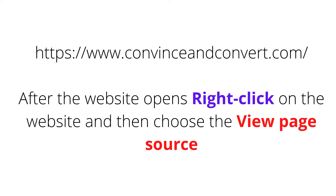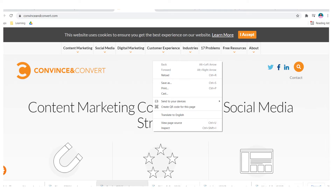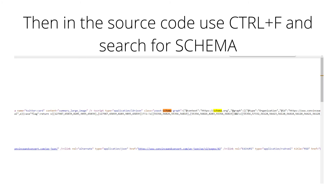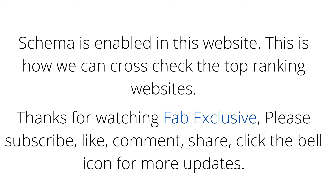After the website opens, right-click on the website and choose 'View Page Source.' Then in the source code, use Ctrl+F and search for 'schema.' Schema is enabled on this website. This is how we can cross-check the top ranking websites.